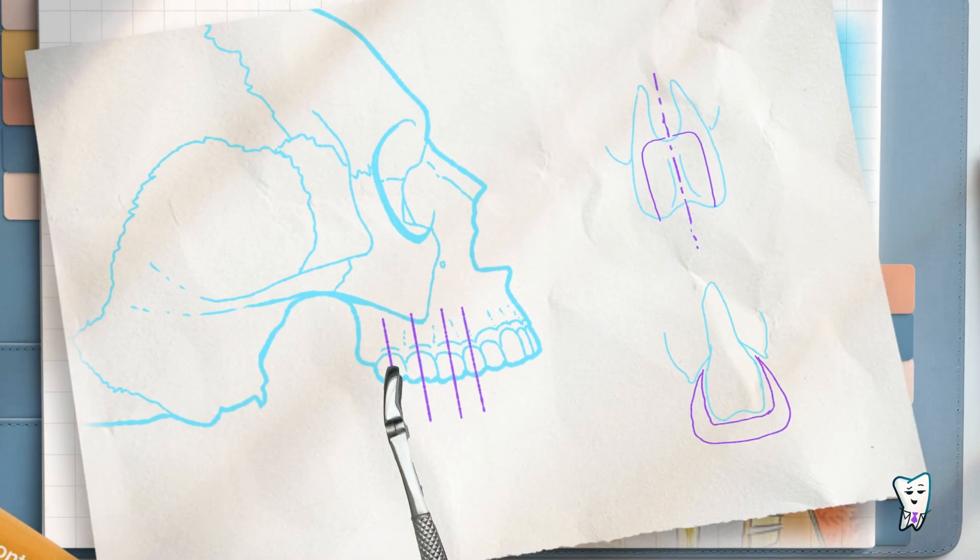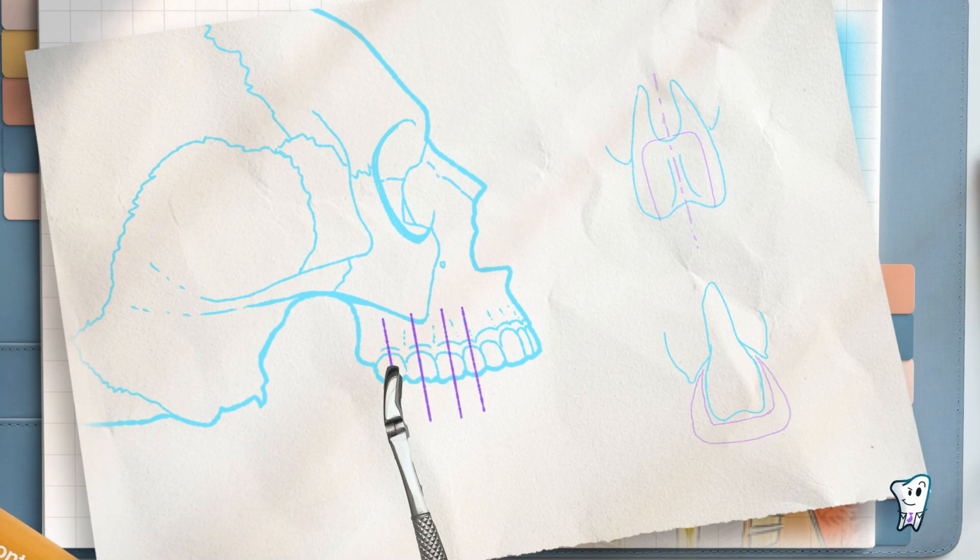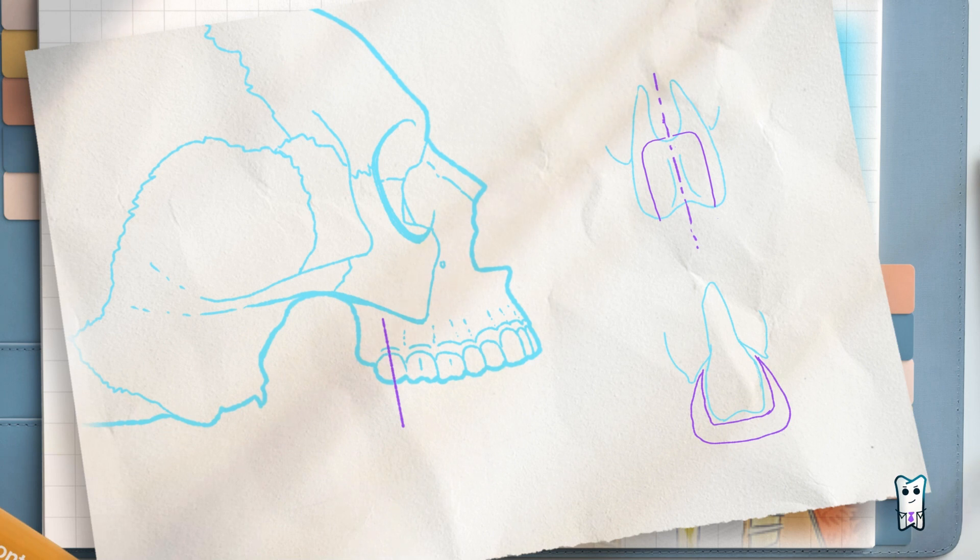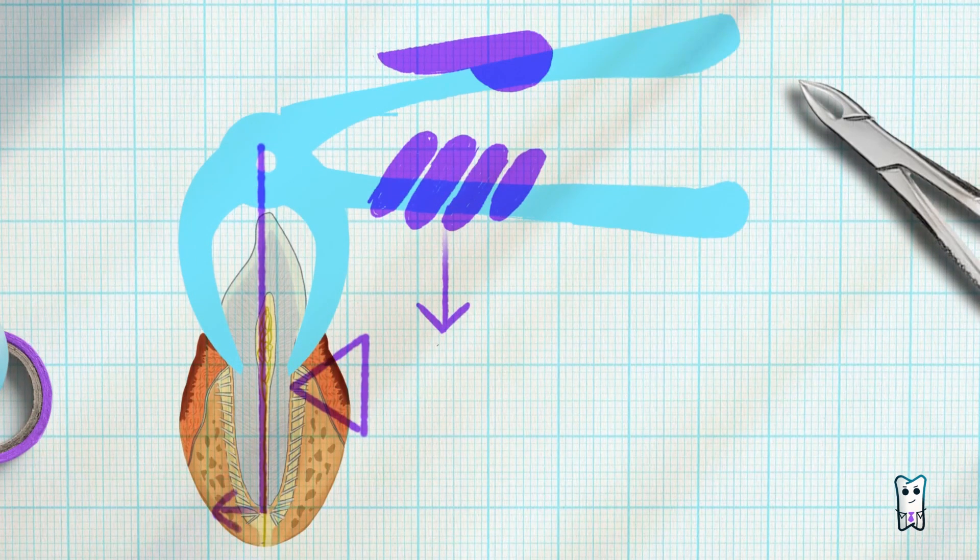Quick tip! Some students are confused which way to hold the forceps, especially for posterior maxillary teeth. The beaks will always guide you. The beaks of the forceps must be parallel to the long axis of the tooth, otherwise the risk of fracture increases.